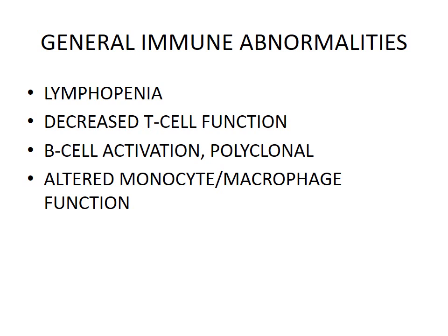The immunocompromised state leads to decreased T-cell function as a result of destruction and loss of CD4 T lymphocytes. This results in B-cell activation, which is polyclonal but can lead to monoclonal activation, and lymphomas — mostly B-cell lymphomas. There is also altered monocyte-macrophage function. HIV viruses have affinity for monocytes and macrophages, which act as vehicles presenting virions to T cells. They can also cross the blood-brain barrier and enter the CNS, presenting with CNS manifestations.